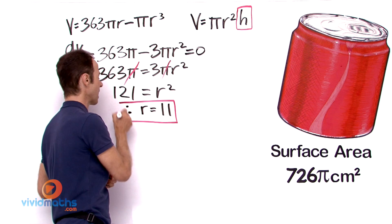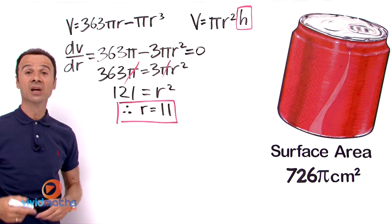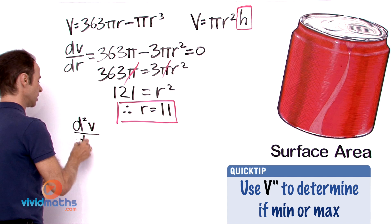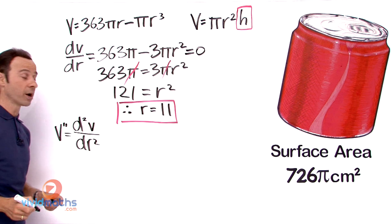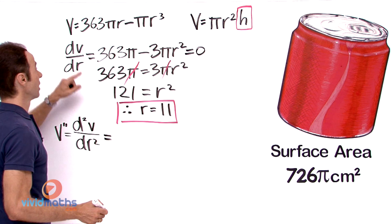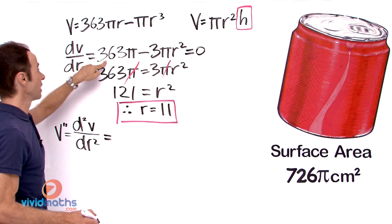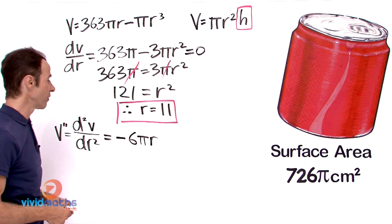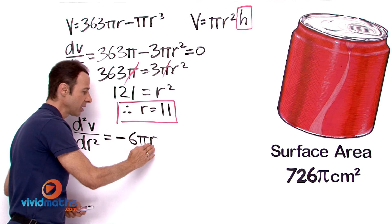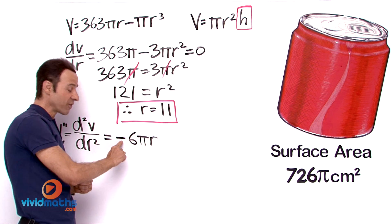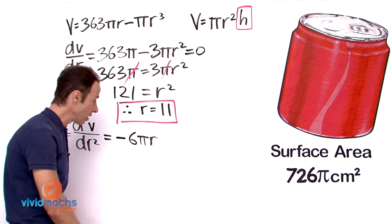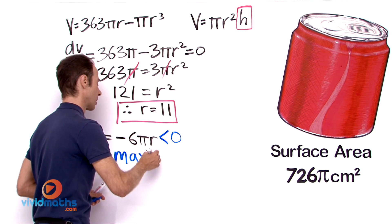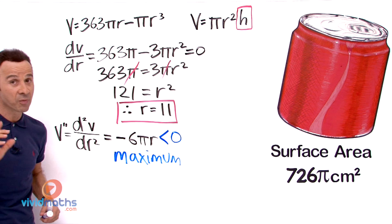We do not yet know if r = 11 gives a maximum or minimum, so let us confirm with the second derivative. Differentiating dV/dr = 363π − 3πr², we get d²V/dr² = −6πr. Substituting r = 11, the result is negative (since we have a negative sign multiplied by positive values), meaning d²V/dr² < 0. This confirms we definitely have a maximum volume.